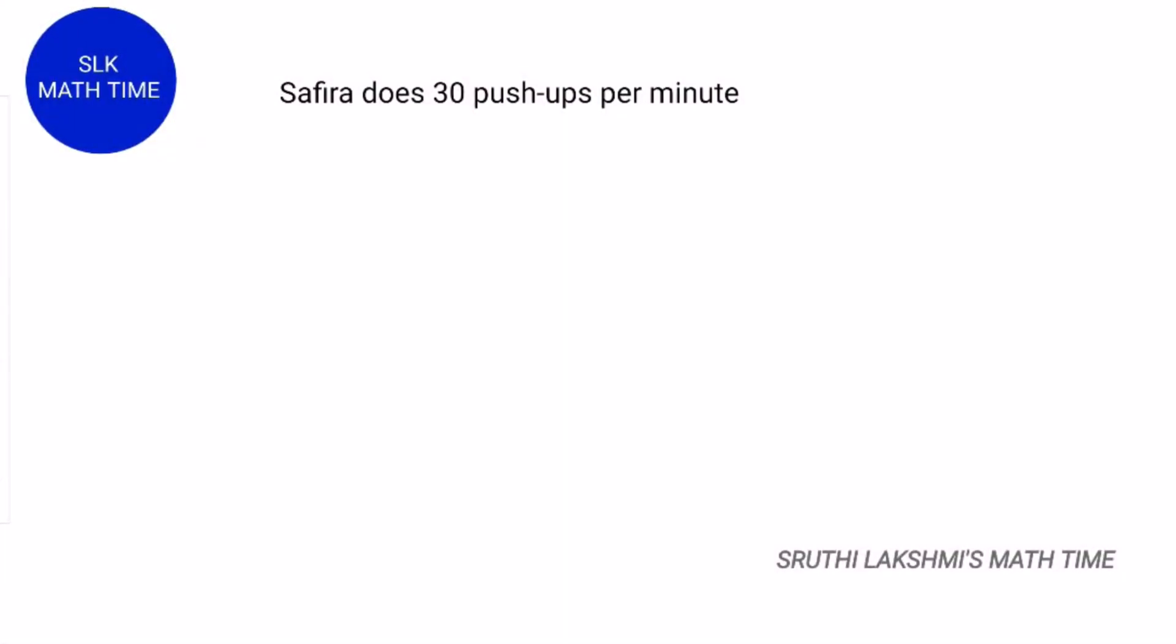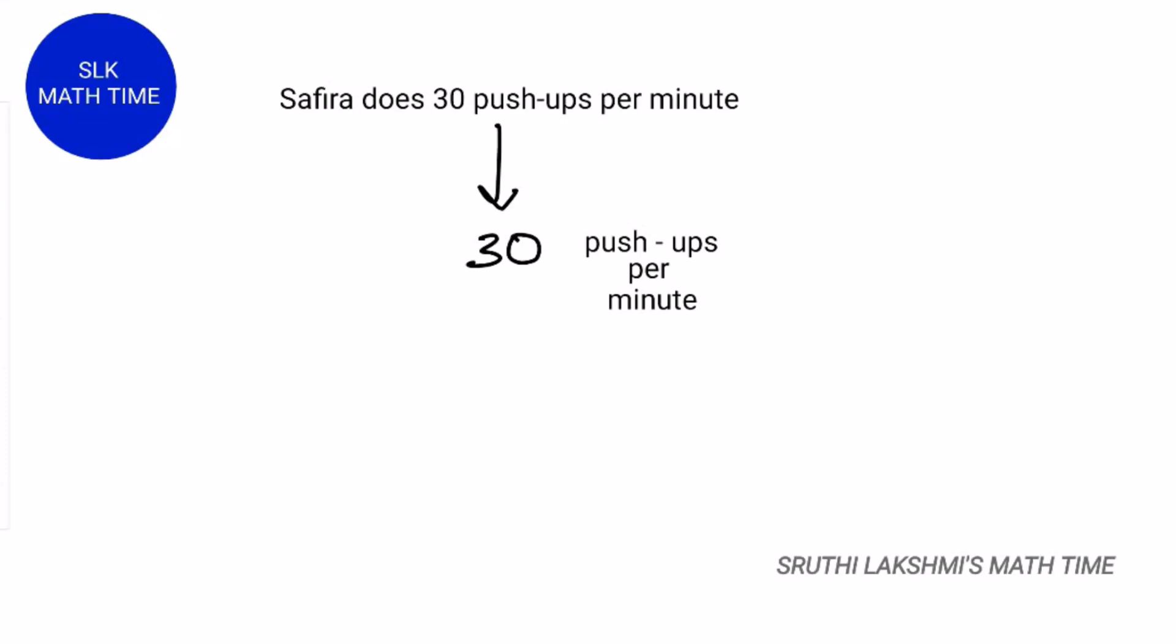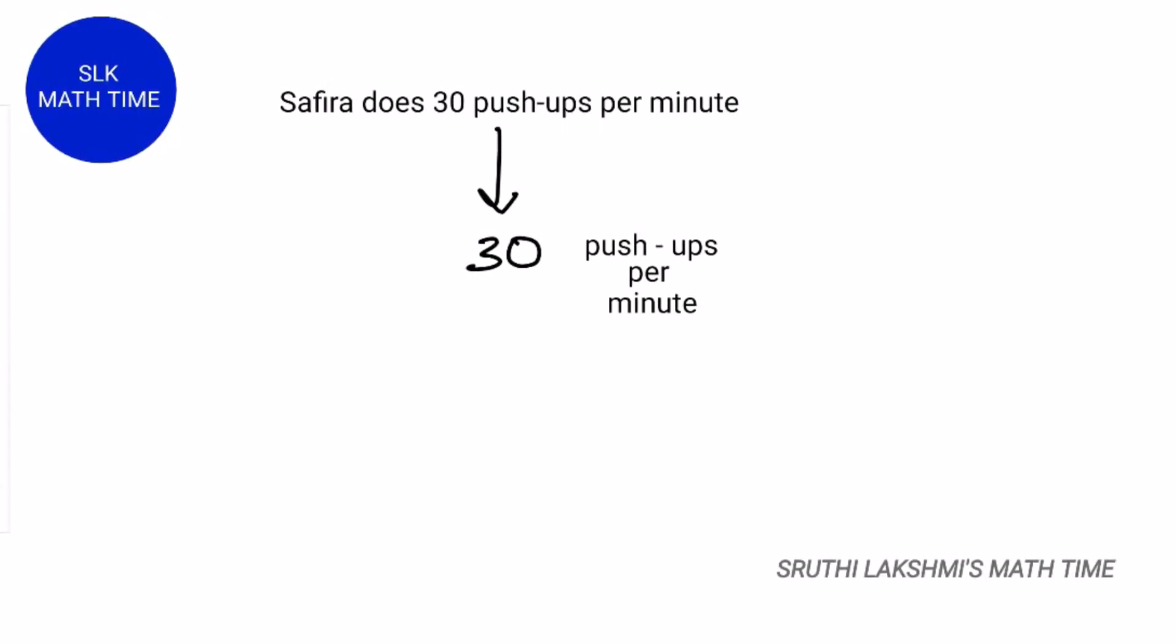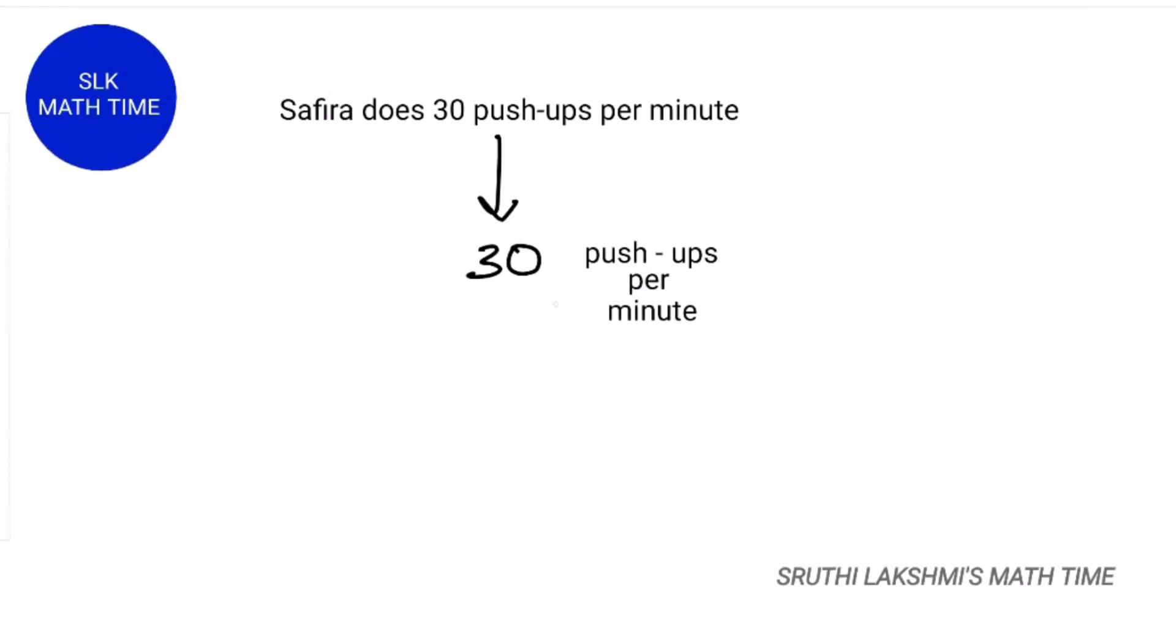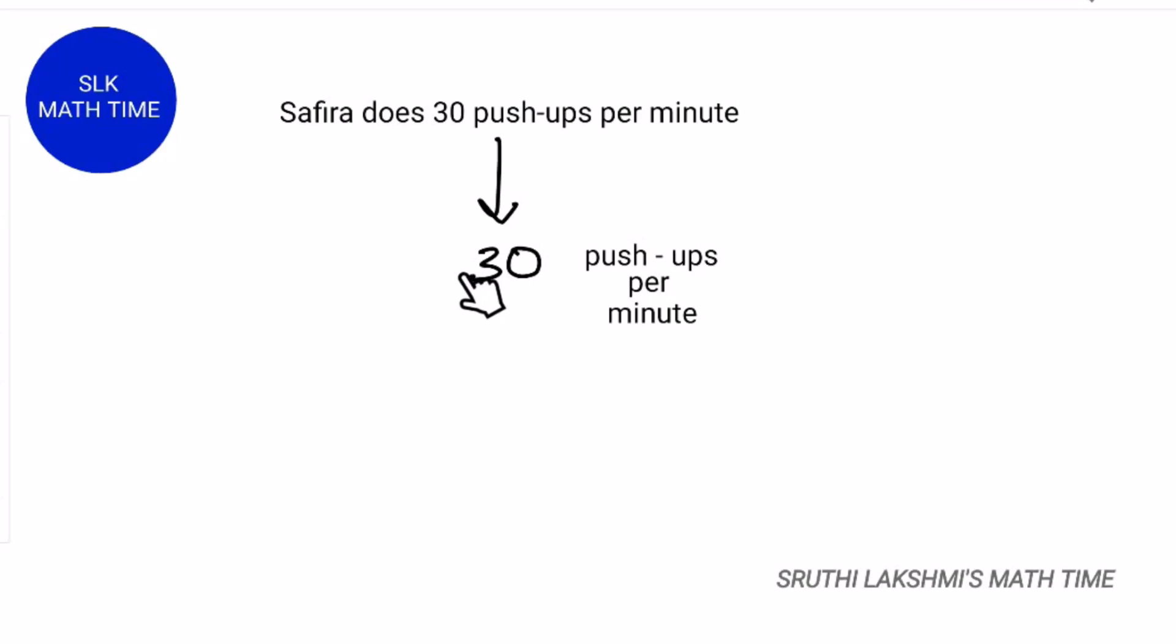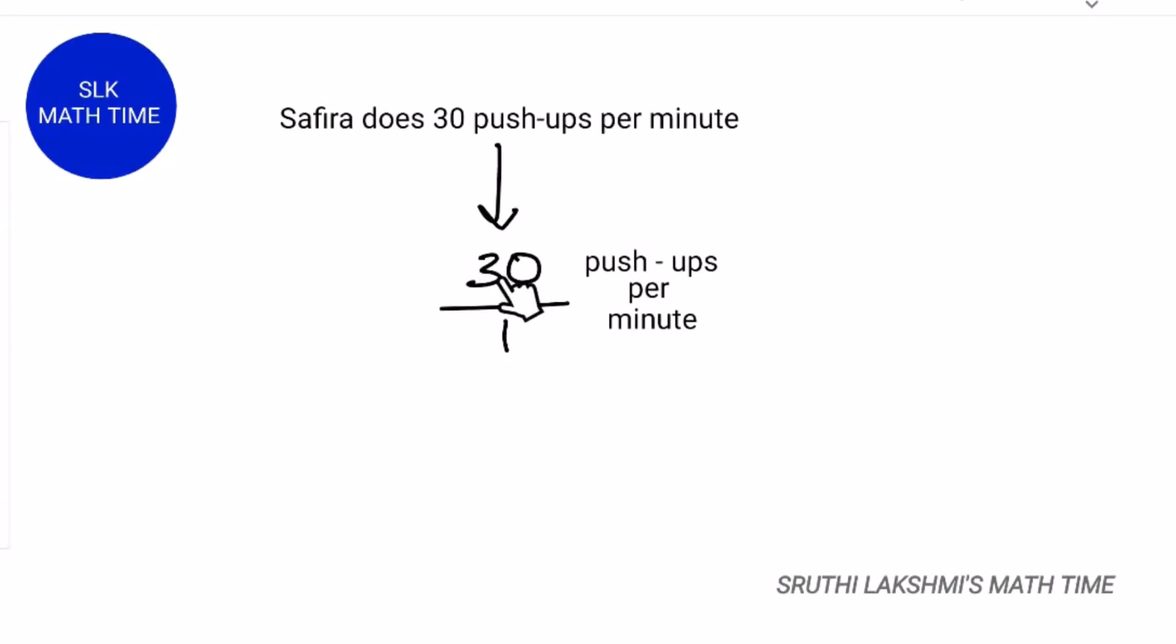Let's see an example of a ratio. Safira does 30 pushups per minute. You might say that a ratio is a comparison between two quantities, but you only have one quantity here which is 30. Remember that to change our number into a fraction, we write the denominator as 1. So it's 30 pushups per 1 minute.